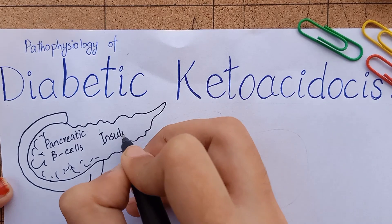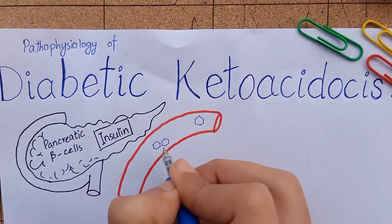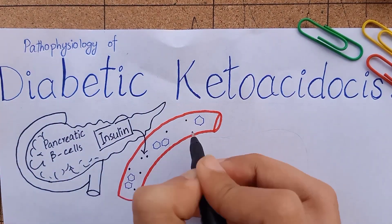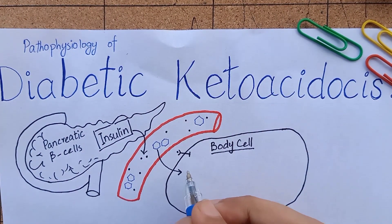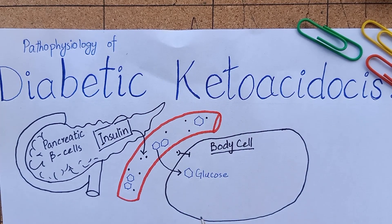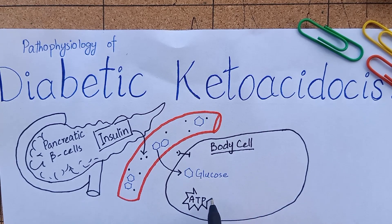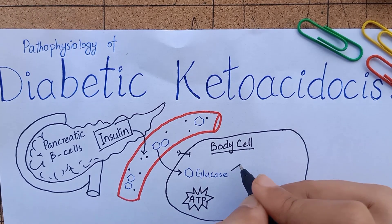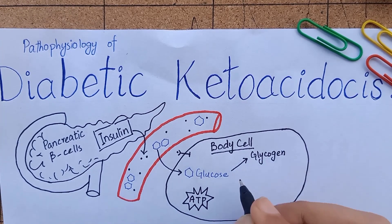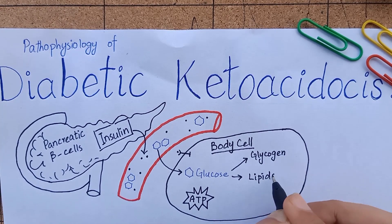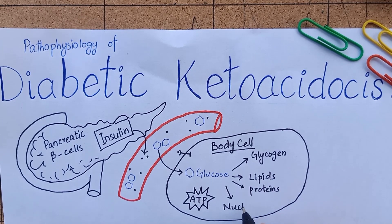Insulin is a powerful anabolic hormone produced and secreted by pancreatic beta cells in response to blood glucose. Insulin causes transport and uptake of glucose into certain cells in the body, thus providing a major source of energy. This glucose is stored as an energy reserve in the form of glycogen, and it is also a building block for biosynthesis of lipids, proteins, and nucleotides.